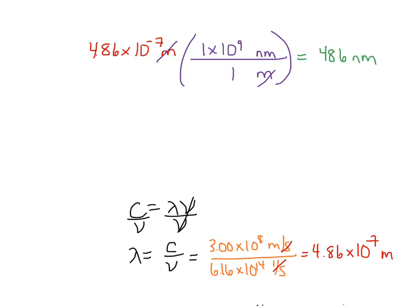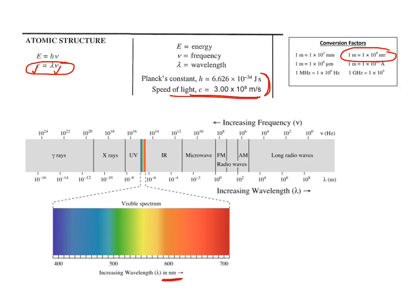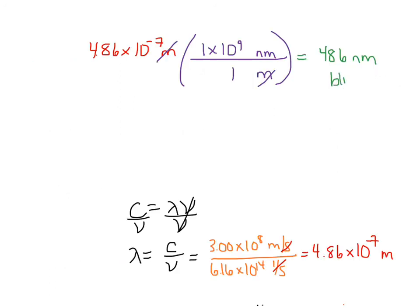And if I go back to my formula sheet, if I look up where about 486 is, it's somewhere around here which you might say is blue or green depending on what your eyes see. So I'd say blue or green or blueish green or greenish blue or something like that.